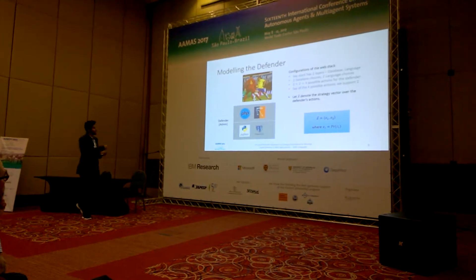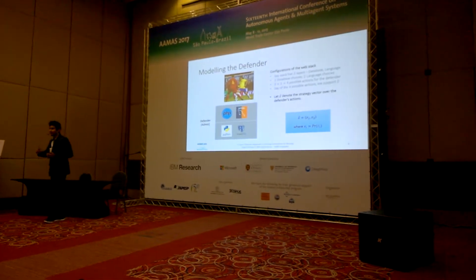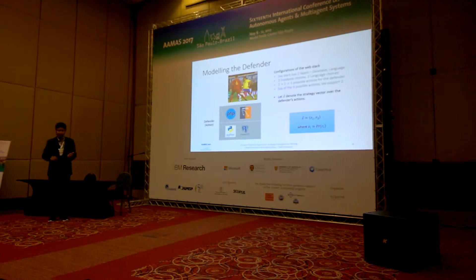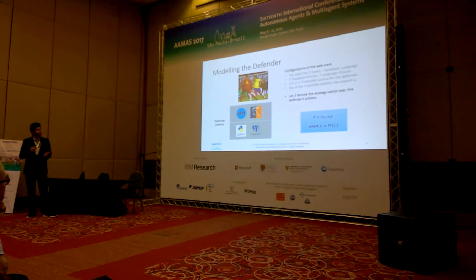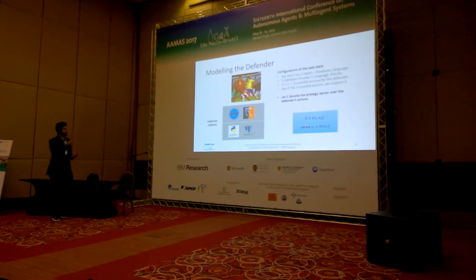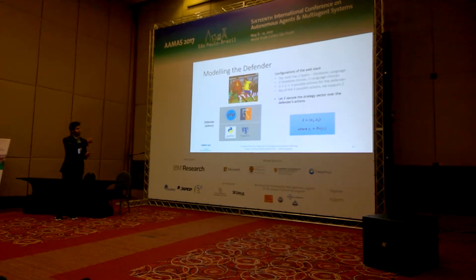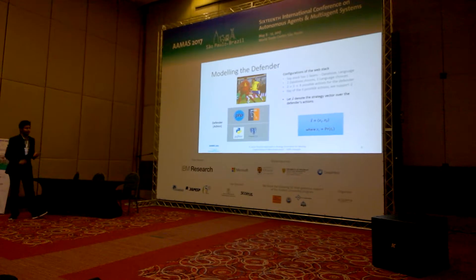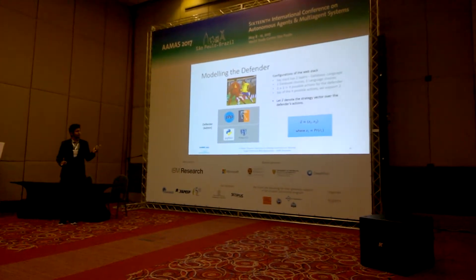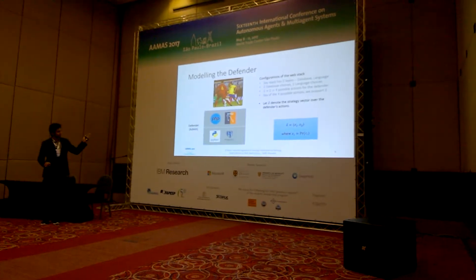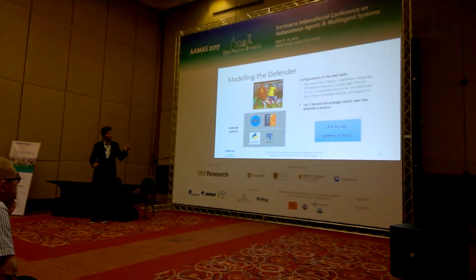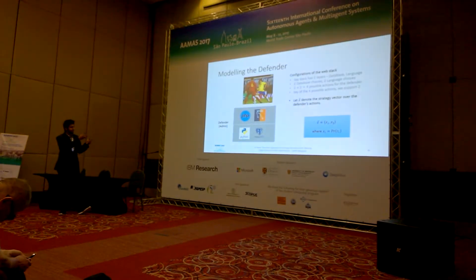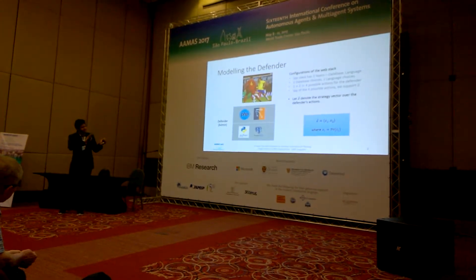Let's talk about the actions available to the defender. The defender has a web application system that can use a coding language and a database. For a simple example, we use two configurations: the same application running with PHP as the coding language and MySQL as the database, and a second with Python and PostgreSQL. The vector x1 denotes the probability of selecting the first configuration, and x2 the probability of selecting the second. Obviously, combinations like PHP with PostgreSQL are also possible, expanding the defender's action set.